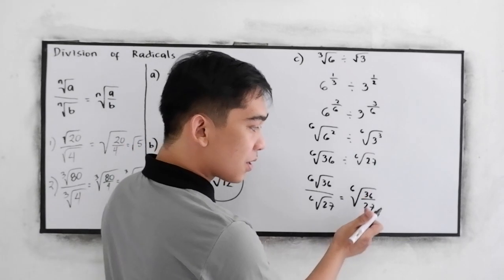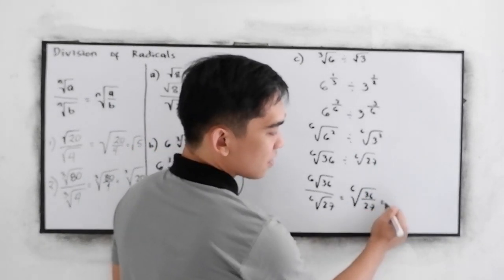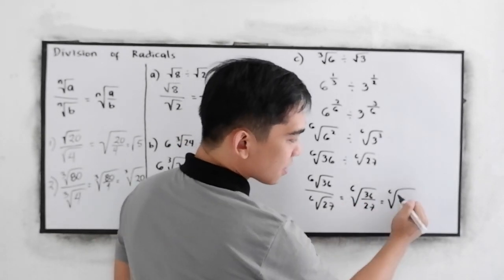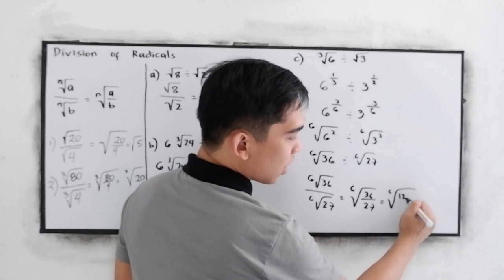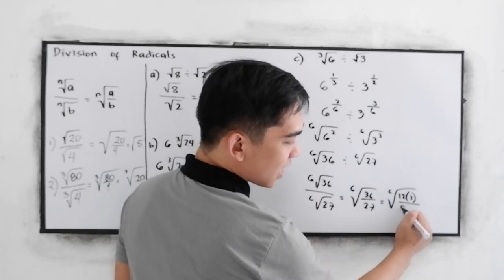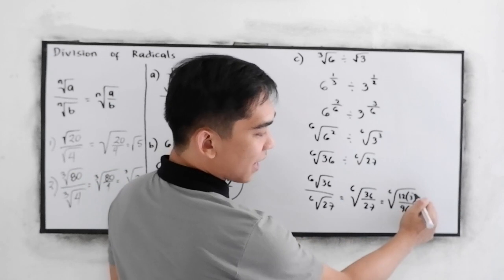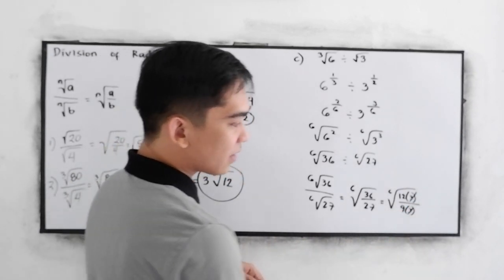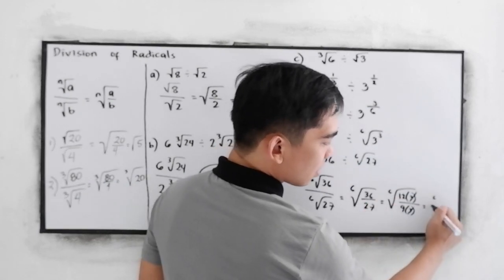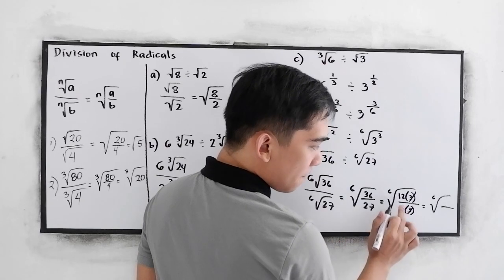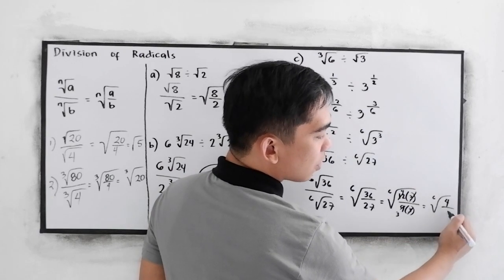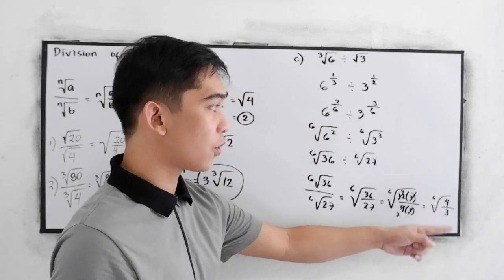Reduce to lowest terms. 6 root of 36, factors can be 12 times 3, and for 27, that is 9 times 3. Now, we can cancel 3. Still, we can reduce this. 6 root of, divisible by 3, so this will become 4, and this will become 3. 6 root of 4 over 3.